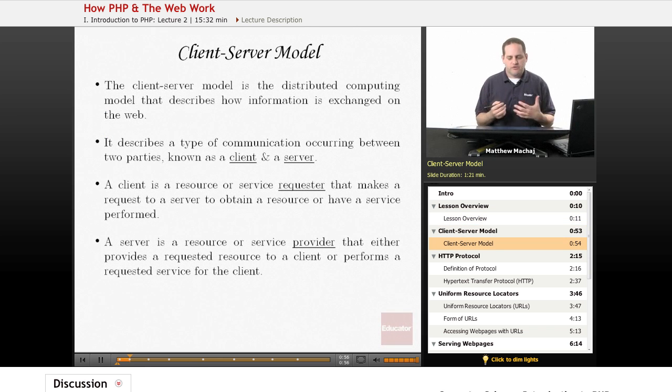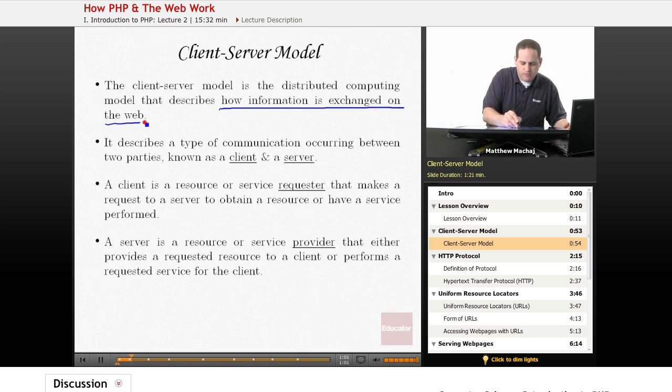So first off, the client-server model is basically a distributed computing model that describes how information is exchanged on the web or over a network. It describes communication between two different parties, one known as a client and one known as a server.